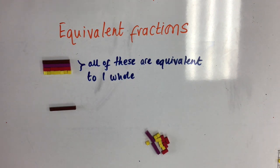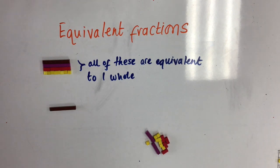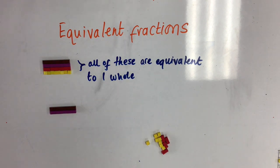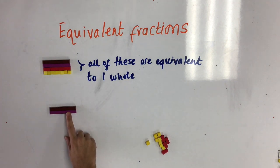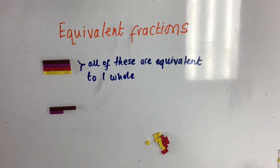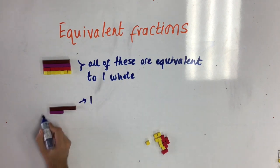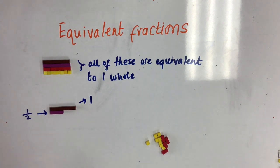Now let's take a look at fractions that are equivalent to one half. I'll keep this brown rod here to show what one whole looks like. To find a half, just like before, I'll put two purple ones underneath because I'm splitting one whole into two pieces. Because we're just focusing on one half, I'm going to take one of them away. So here we can see one whole, but the purple one is just representing a half.